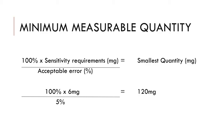A typical balance used in the pharmacy has a sensitivity requirement of 6 mg. If I can accept an error of 5%, which is pretty common, then the smallest quantity that my balance can weigh out with that desired level of accuracy is 120 mg.